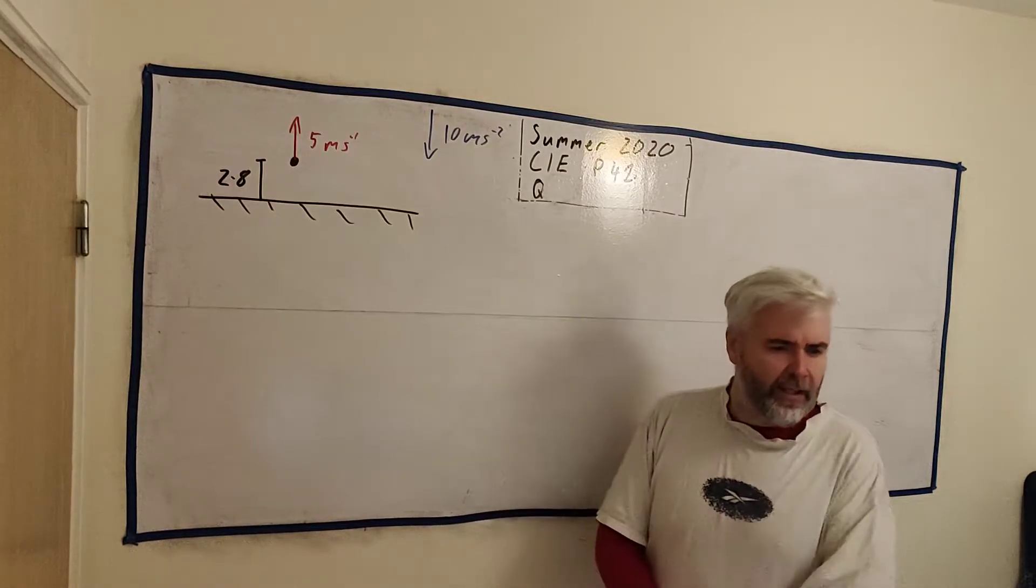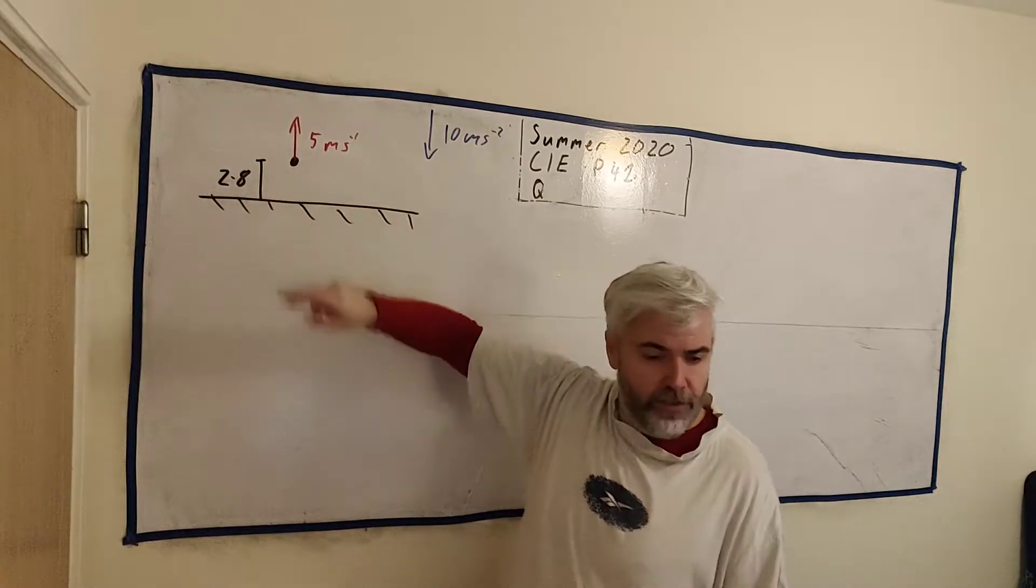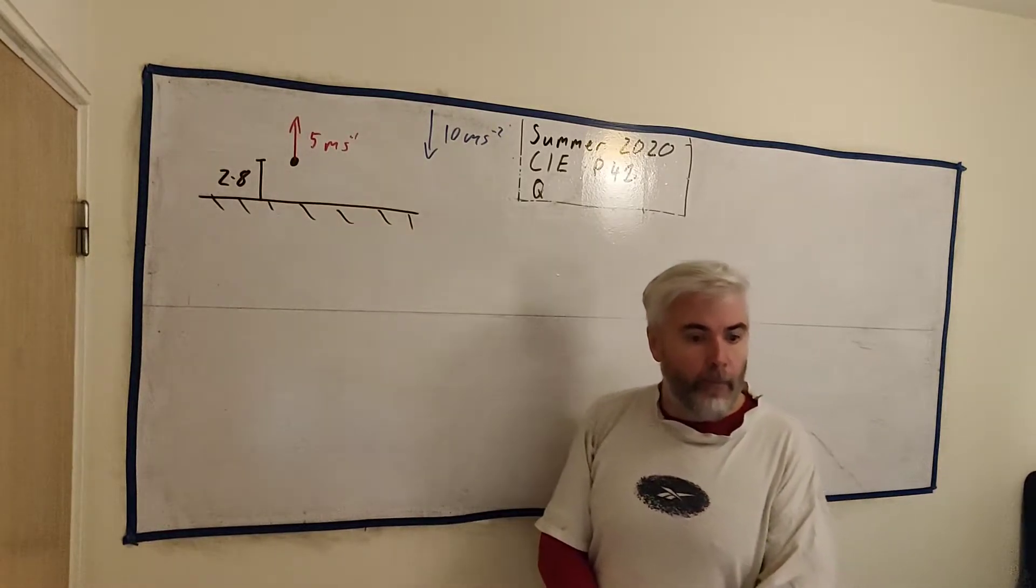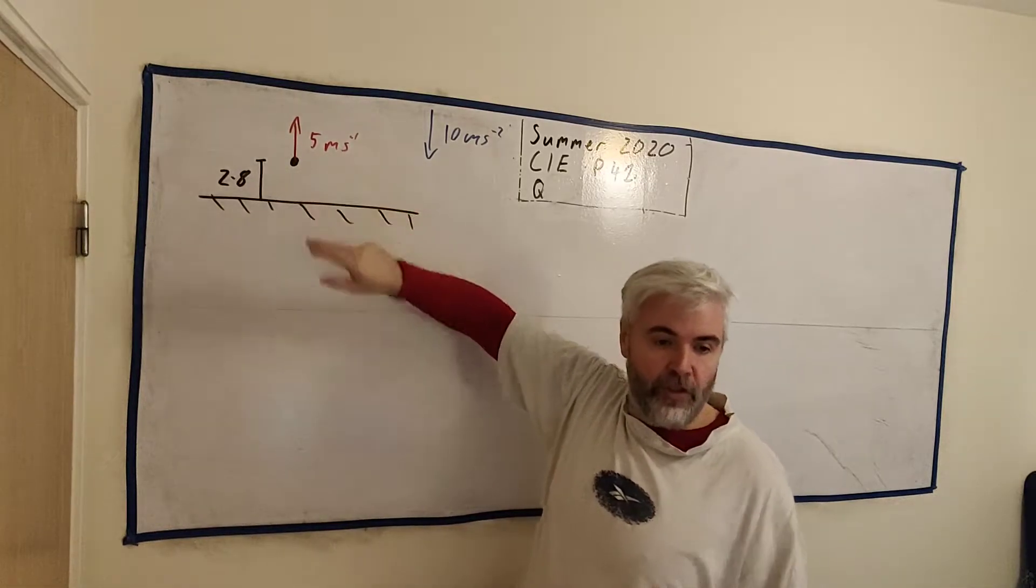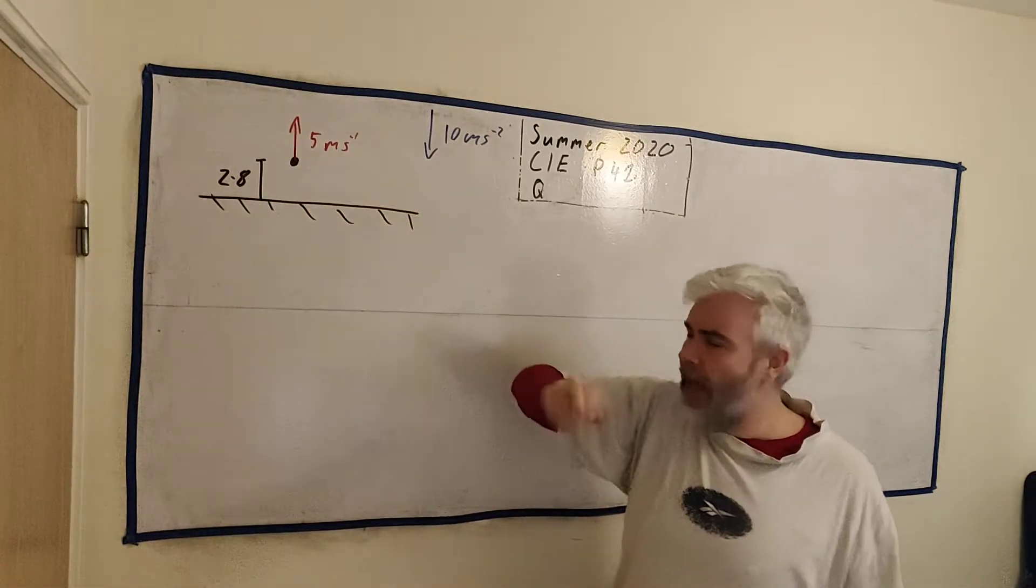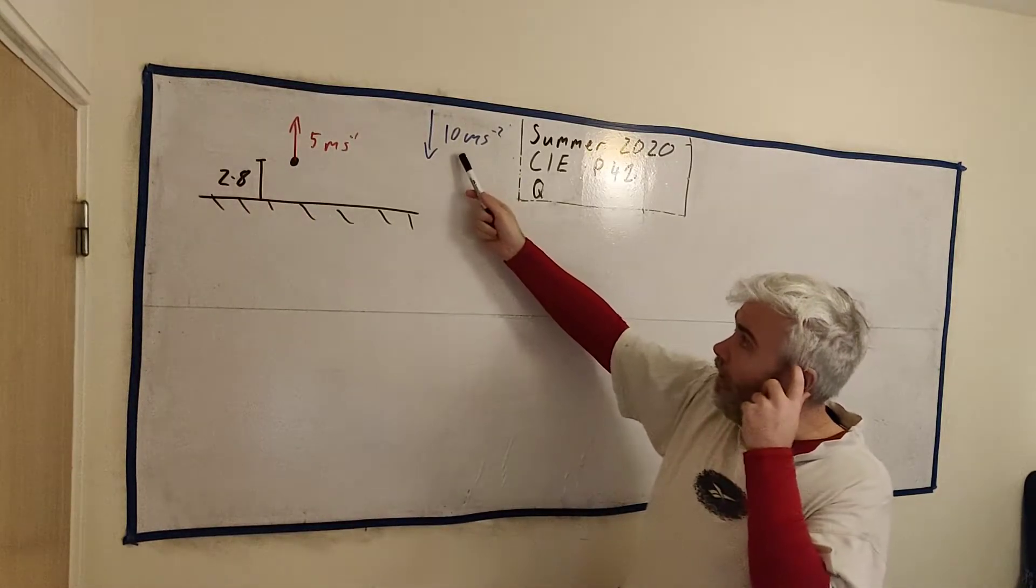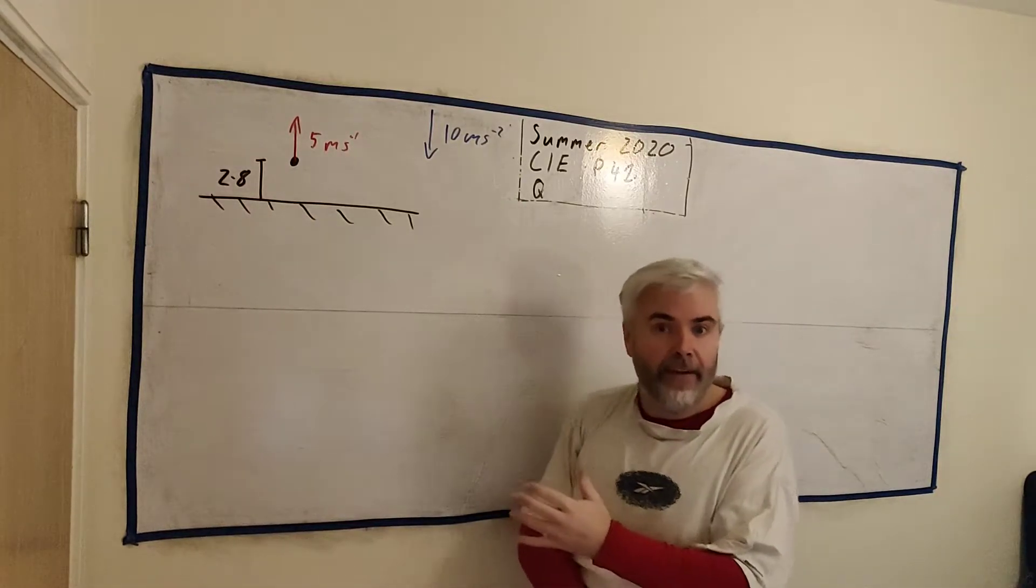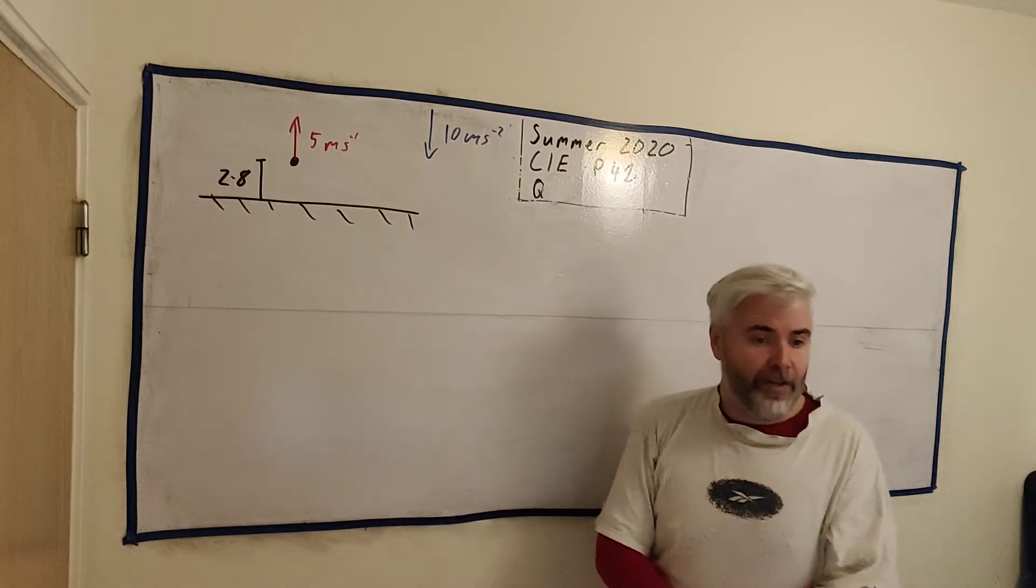This question is fully set up using English. They tell us that a particle P, which I've drawn in here, this dot, is projected vertically upwards with speed 5 meters per second from a point A which is 2.8 meters above the ground. I've also jotted in that we're going to use gravity as 10 meters per second squared. And they ask us a couple of questions.